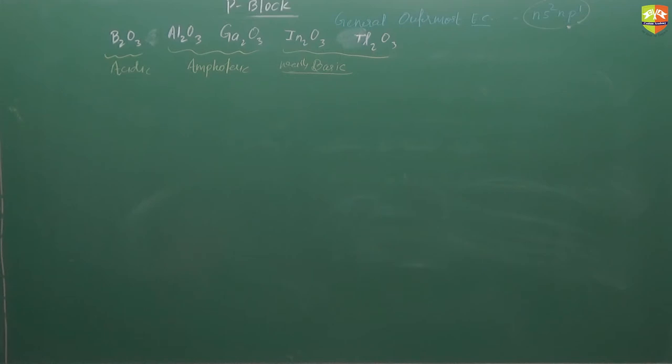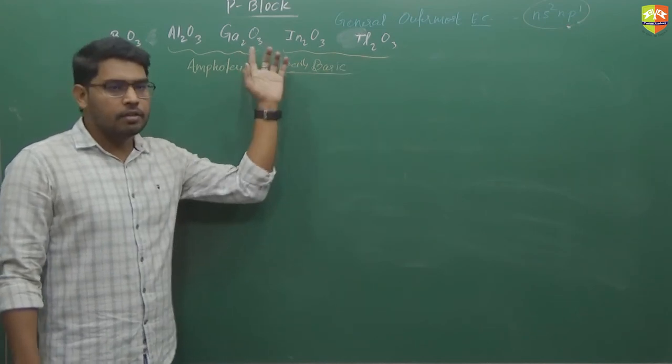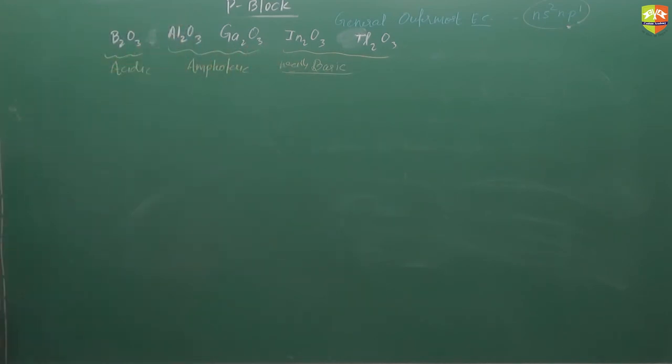Aluminium has plus 3 oxidation state. Tl2O3, it is not that stable. We are talking about the possibility, if they ask you whether it forms or not, yes it can form, but it is not stable. That's why you see most of the reactions you won't see these oxides, let's talk about only these two.